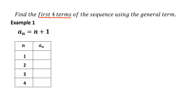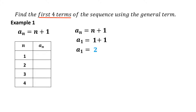For Example 1, the general term is a sub n equals n plus 1. Let us begin finding the first term. Substitute n equals 1: a sub 1 equals 1 plus 1, which equals 2. Therefore, the first term of the sequence is 2.